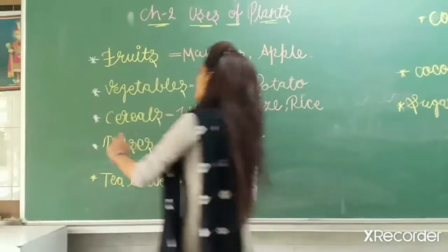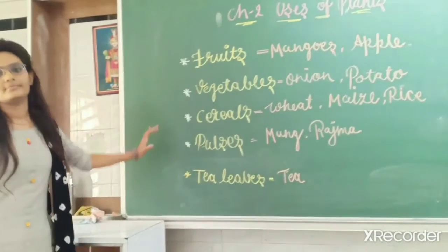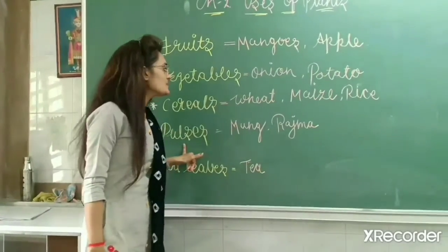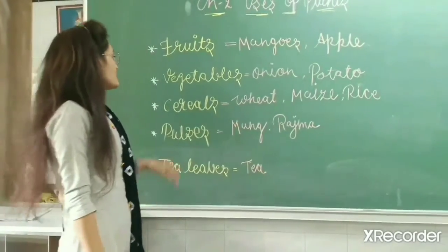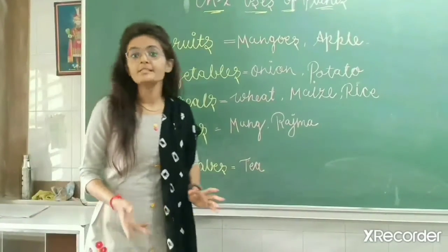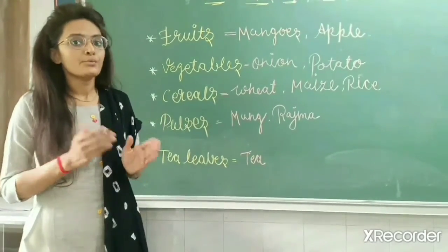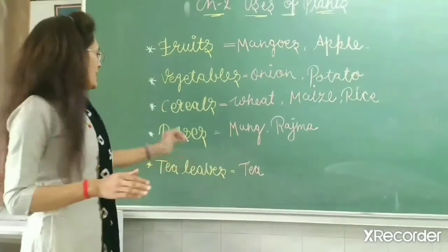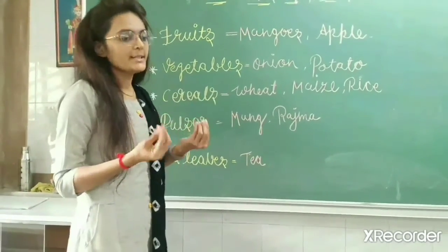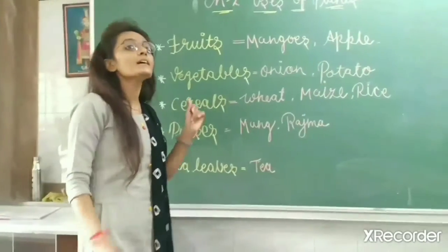Now cereals and pulses both come in food grains. Some cereals are ground to make flour, which means atta. From this atta, which comes from wheat, we make bread. Some pulses are found inside pods, while cereals are not found inside pods.